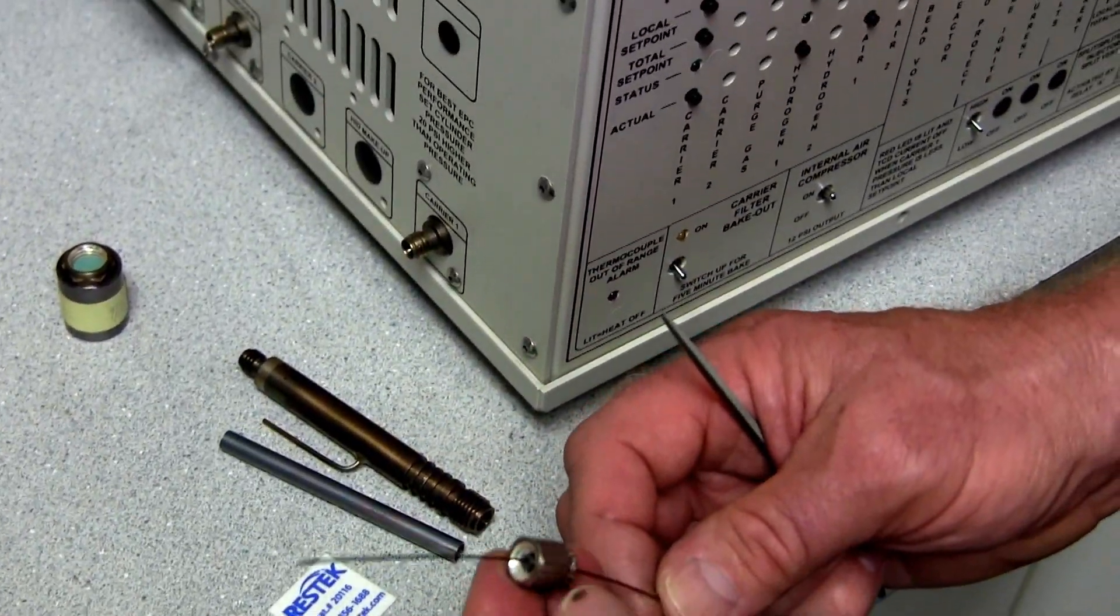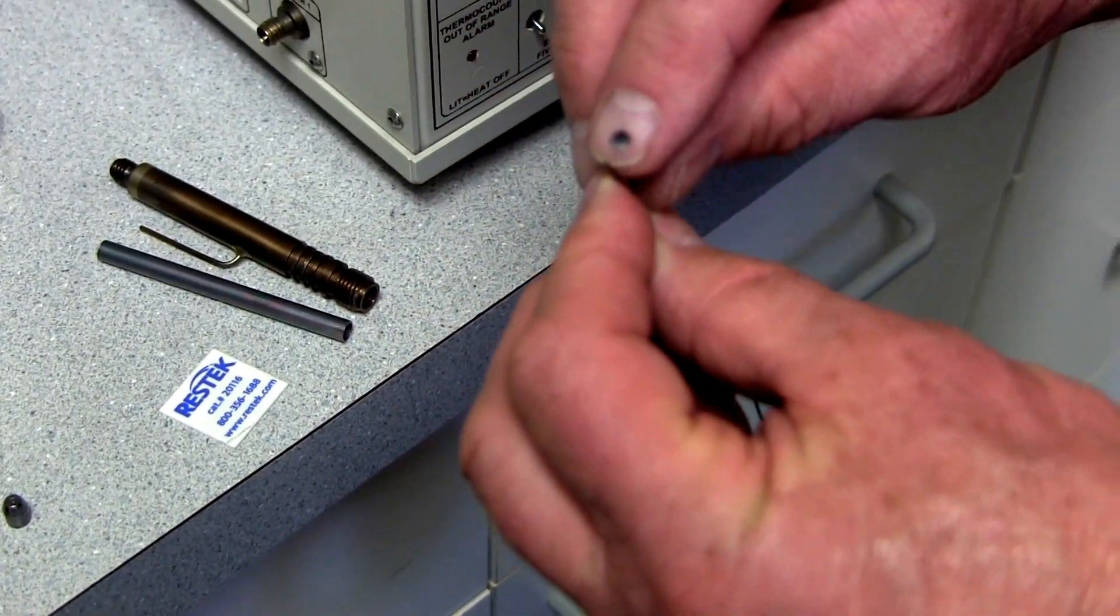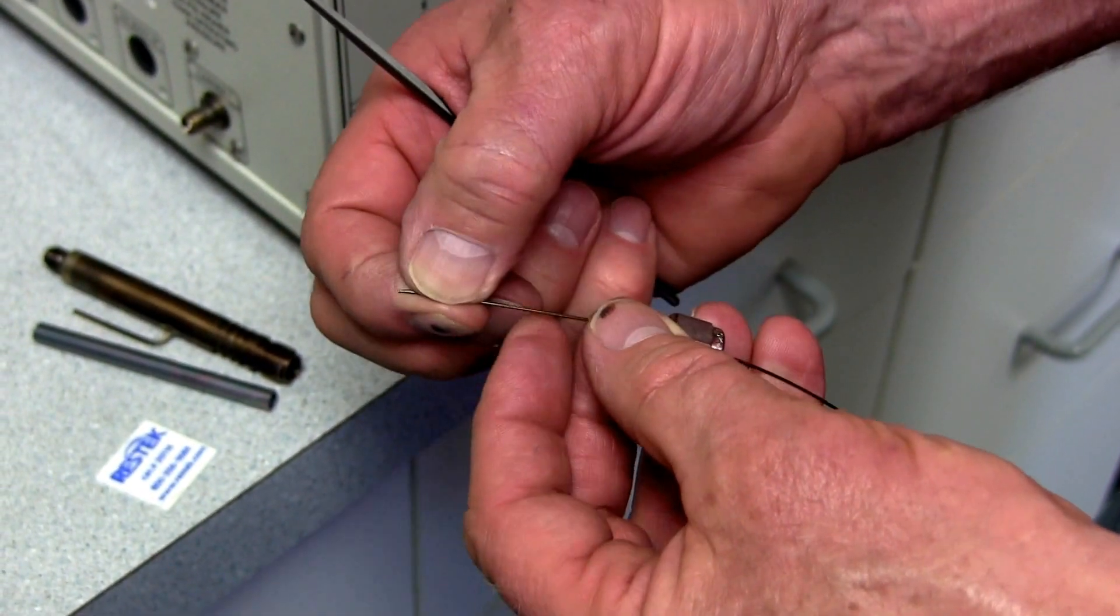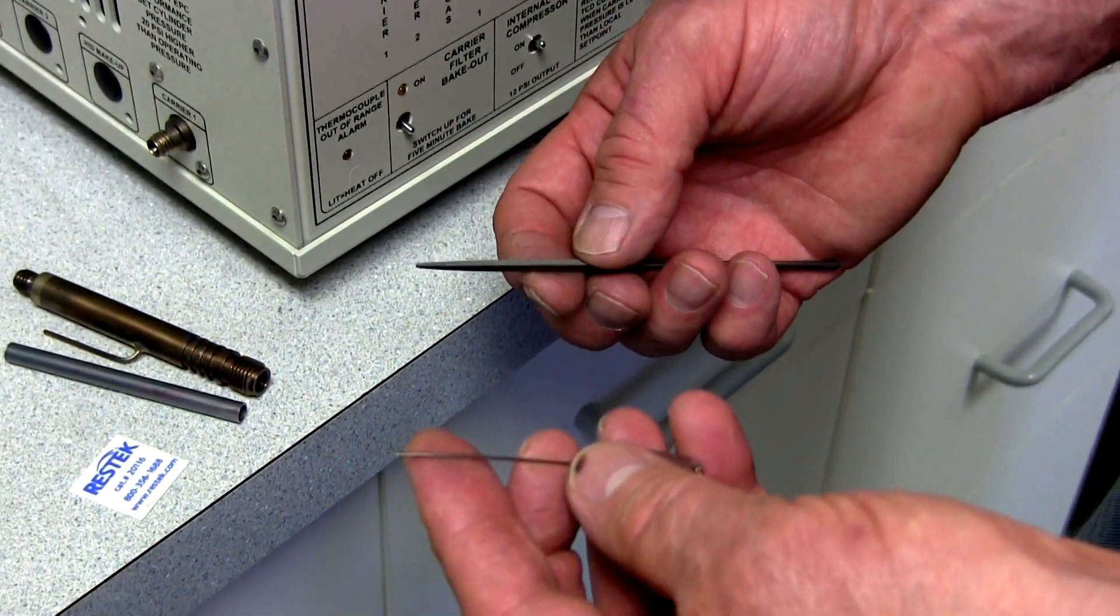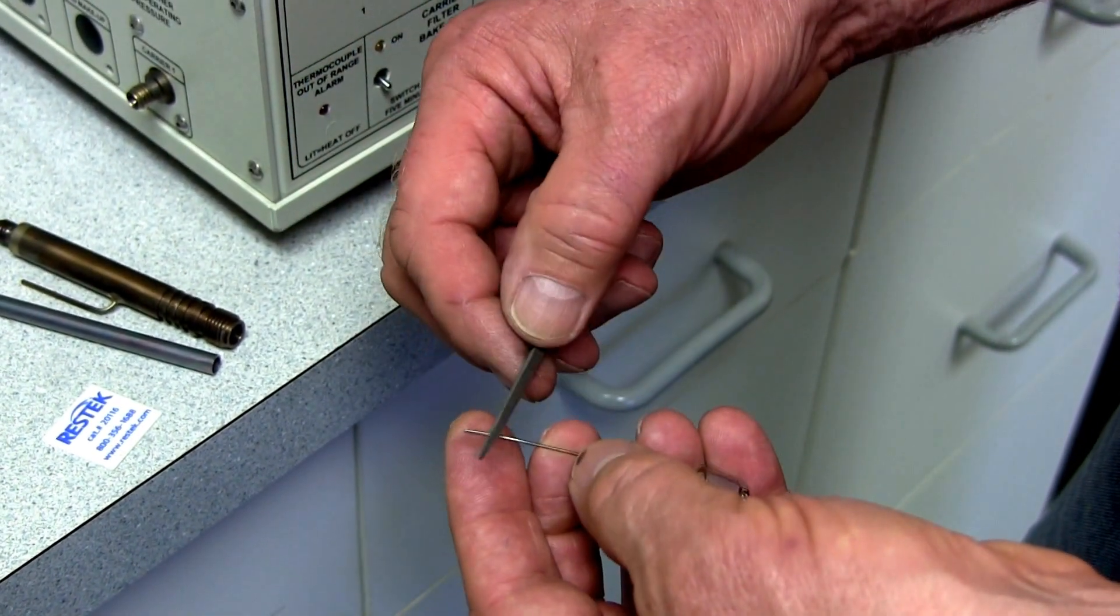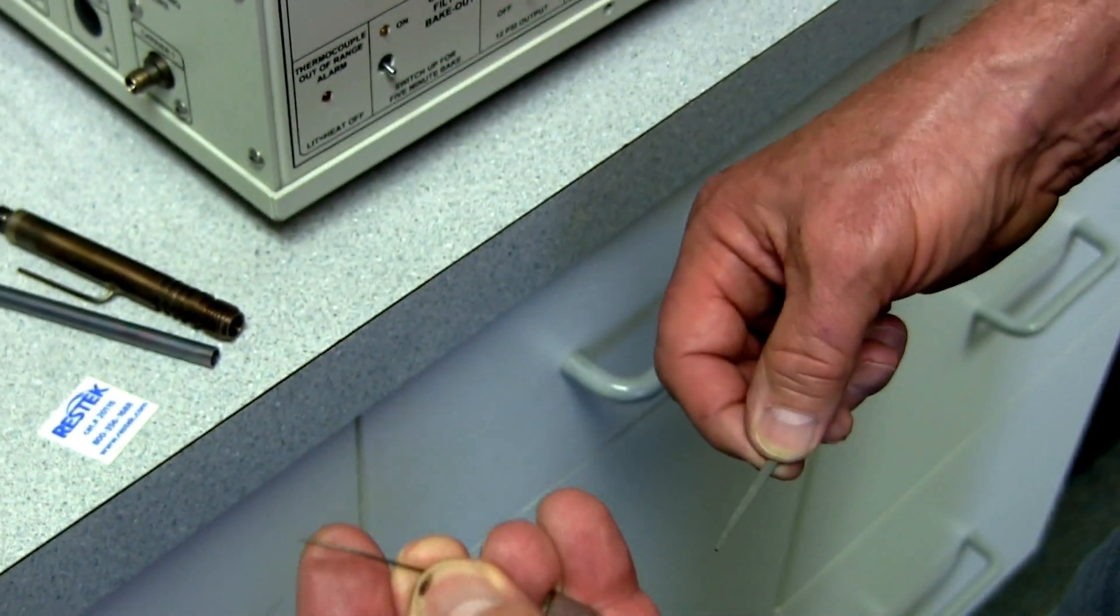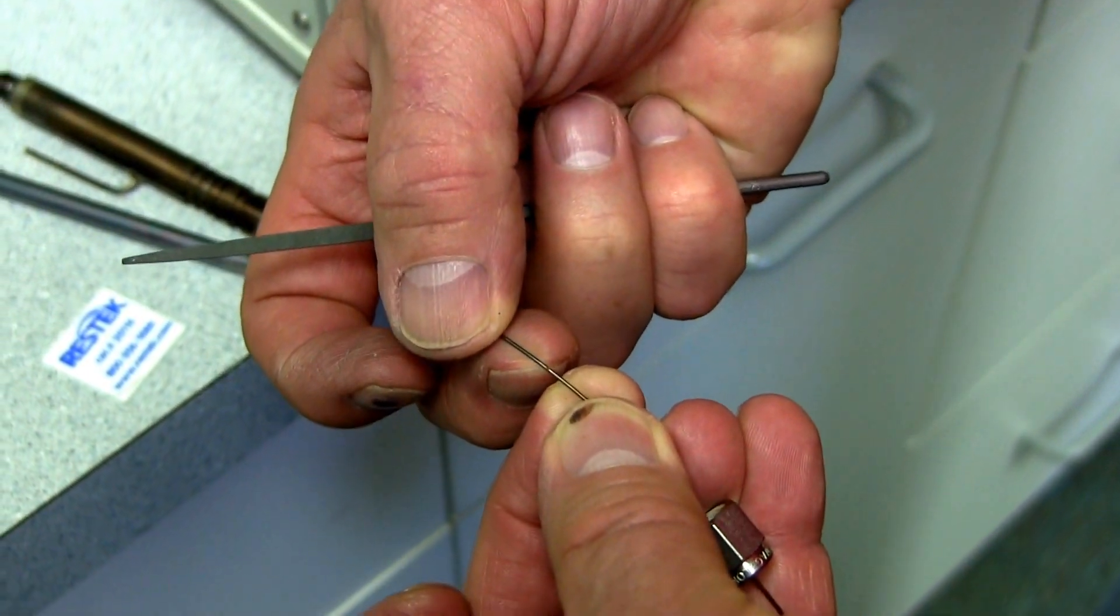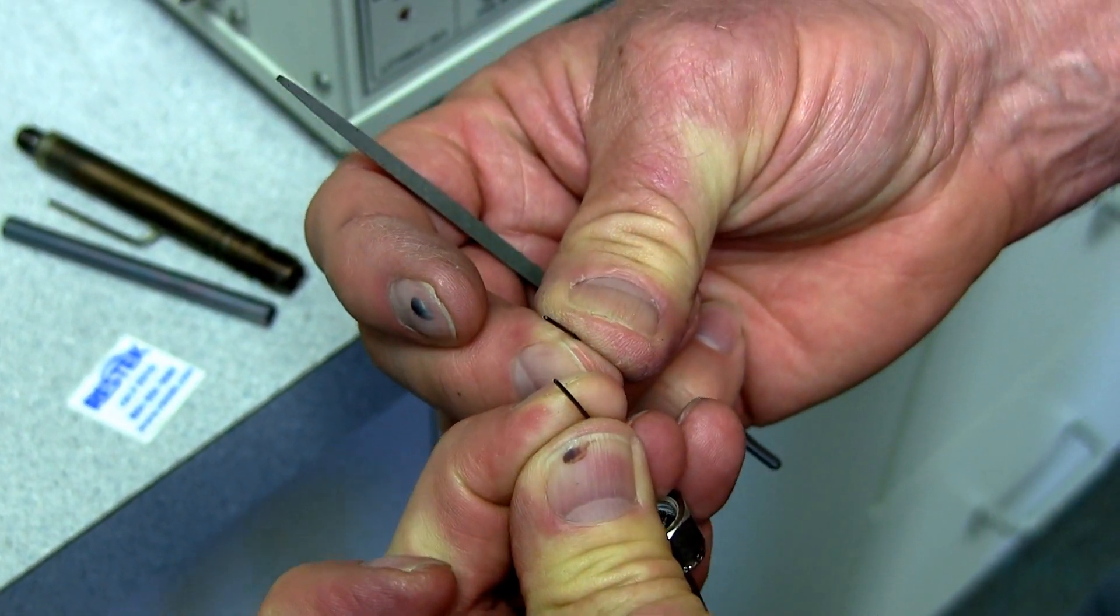You may need also to cut the column because any time you shove the column through a graphite ferrule, it's likely that small little bits of graphite get stuck in the mouth of the column. Sometimes you can see them, sometimes not, but it's not good for the chromatography to have graphite in the column because molecules stick very strongly to graphite. There's several ways to cut the column. The easiest way is to use a little triangle file. You hold the column between your two fingers and you give a nice quick pull that makes a little nick in the column which you can then place directly over your fingernail and the column will break off beautifully clean like that.